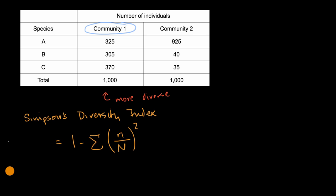So let's start with community one. So I'll say diversity index for community one is going to be equal to one minus, so we have 325 over 1,000, squared.